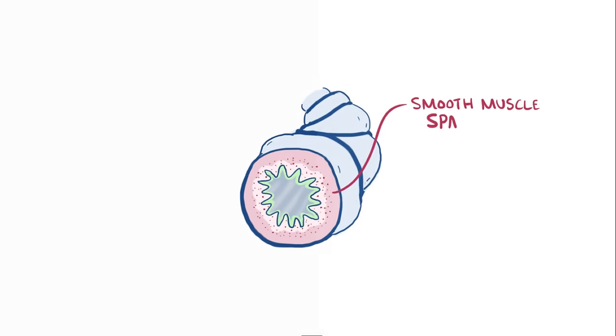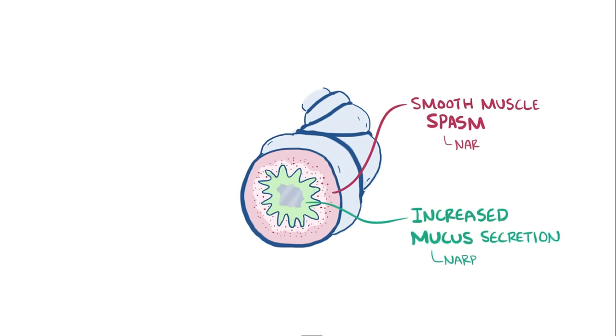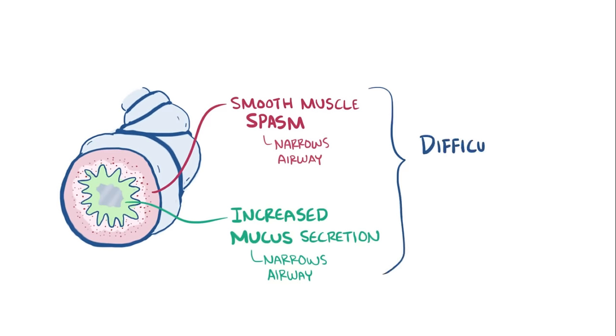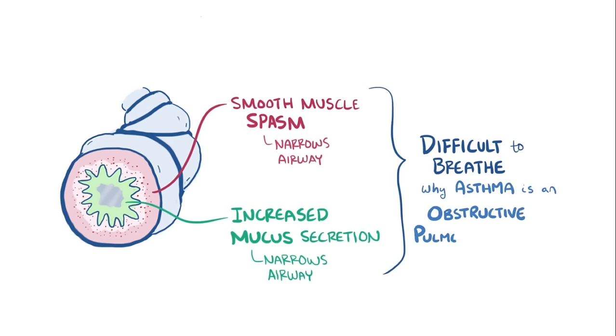Early on, minutes after exposure to the allergen, smooth muscle around the bronchioles start to spasm, and there's increased mucus secretion. This narrows the airways, making it difficult to breathe, and this is why asthma is considered to be a type of obstructive pulmonary disease.